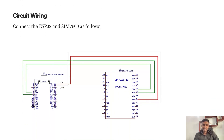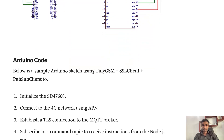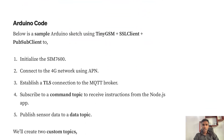We'll discuss adding the root CA certificate shortly. For the circuit diagram, it's straightforward — connect the SIM7600 pins accordingly, ground to ground, and we are using UART communication to communicate with the SIM7600.